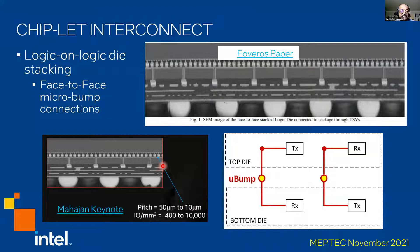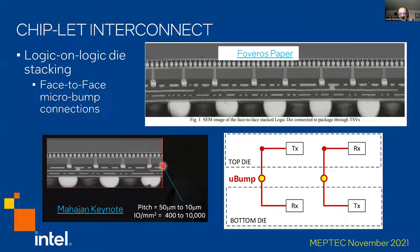The kind of chiplet interconnect we are talking about is really logic-on-logic die stacking. These are images from published work where we have a face-to-face micro bump connection. You flip over and place one die on top of the other, and the two are interconnected using a micro bump solder, as shown. It is important to keep that in mind.